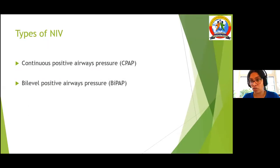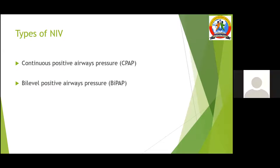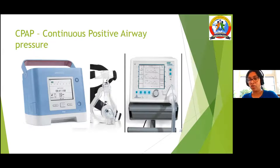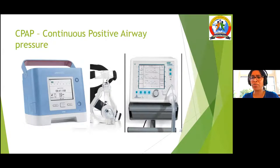We have two types of NIV settings: CPAP — continuous positive airway pressure — and BiPAP — bi-level positive airway pressure. We use different machines such as Philips BiPAP Vision or Trilogy. In your setting, please find out what machine is used, but the basic principle and observations are the same.